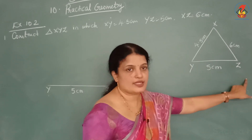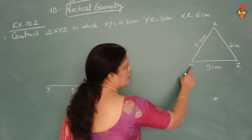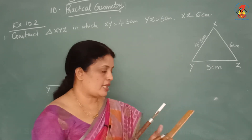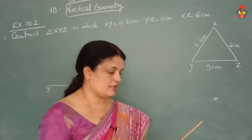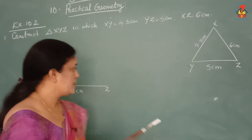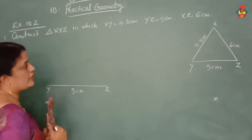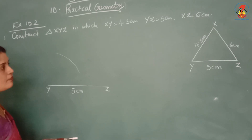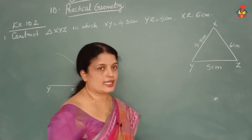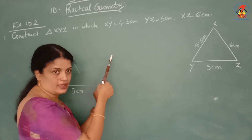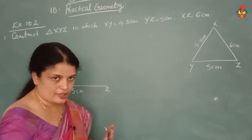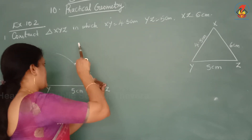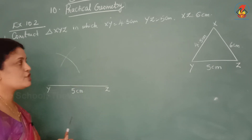With Y as a center, draw an arc of radius 4.5 cm. Next, with Z as a center, draw an arc of radius 6 cm. Take the measurement of 6 cm and, with Z as center, draw the arc. These two arcs meet at a point.